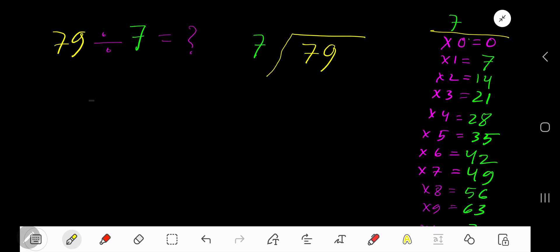21 plus 7 is 28. This process continues. 7 goes into 7 how many times? 1 time. 1 times 7 is 7. Subtract to get 0. Bring down the next digit, 9. 7 goes into 9 how many times? 1 time. 1 times 7 is 7. Subtract to get 2. So our answer is 11 remainder 2.